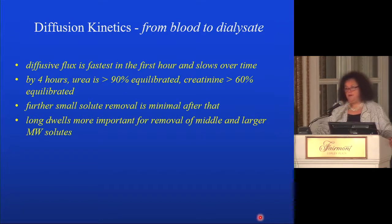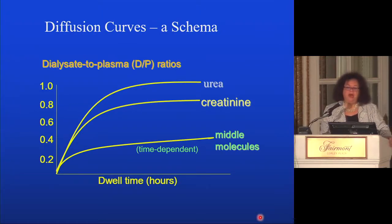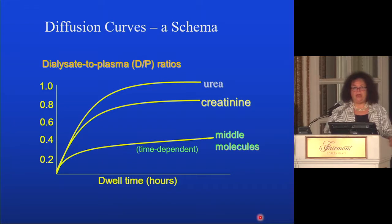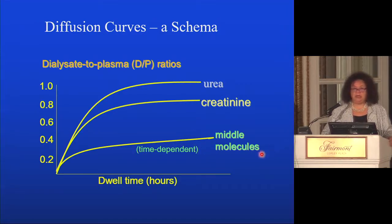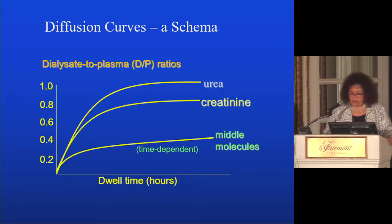If you leave fluid in longer than four hours, you won't remove much more urea. However, you will continue to remove the slower-moving, larger, less diffusible solutes. On the y-axis, the dialysis to plasma ratio — where one means completely equilibrated — shows urea rapidly equilibrating, creatinine moving more slowly, and middle molecules being time-dependent. They're bigger and slower-moving, so a long-day dwell is very good for middle molecule removal because of the long contact time between PD fluid and the blood compartment.